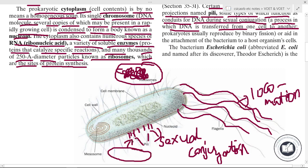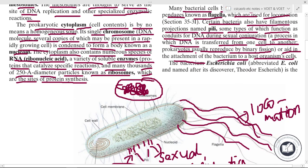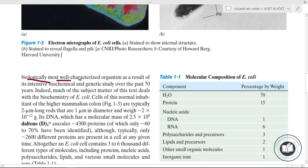Prokaryotes usually reproduce by binary fission, or aid in the attachment of the bacteria to host organism cells. The bacterium Escherichia coli, abbreviated E. coli and named after its discoverer Theodor Escherich, is the biologically most well-characterized organism, as a result of intensive biochemical and genetic study over the past 70 years.